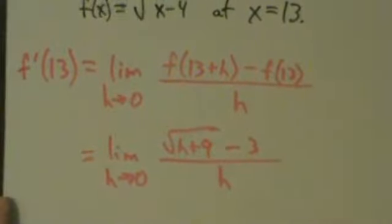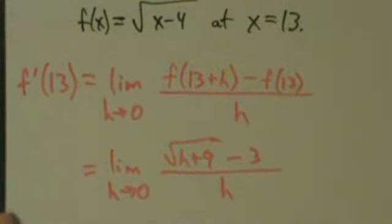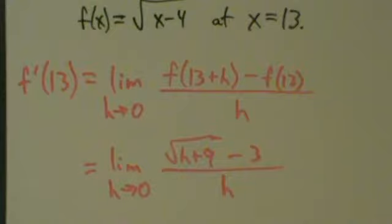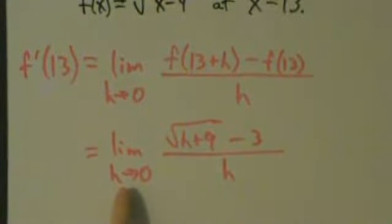All right, so what do we do now? Well here, we've actually seen some limits in a few videos ago that were sort of related to this. So what we did was, if we do direct substitution right here, then we end up with 0 over 0, right? And we can't do that.